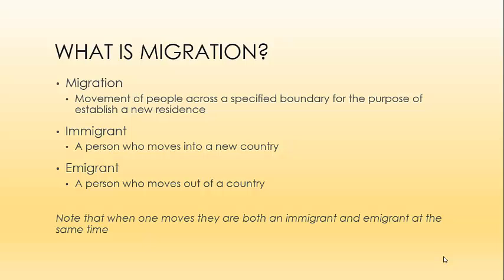From migration, we have two distinct groups or actions that can be taken. We have an immigrant, who is a person who moves into a new country, as opposed to an emigrant, one who moves out of a country. It's important to remember that when someone moves from one country to another, they're both an immigrant and an emigrant at the same time — an immigrant to their new country and an emigrant from their former country.